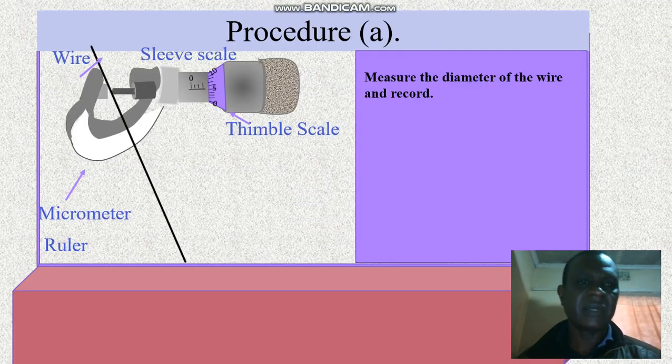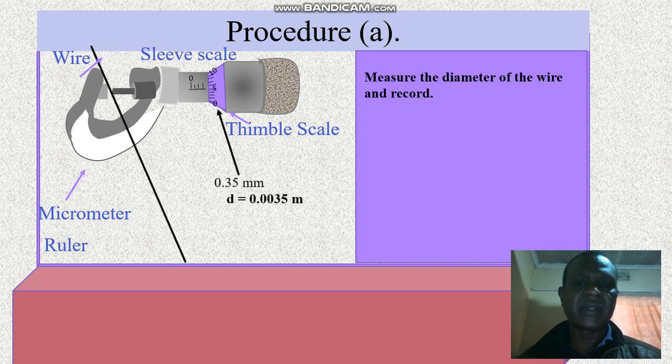Let's measure the thickness of the wire. The slip scale is 0.3. The thimble scale is 0.05. We add the two and then we get 0.35 millimeters and you convert it into SI units.